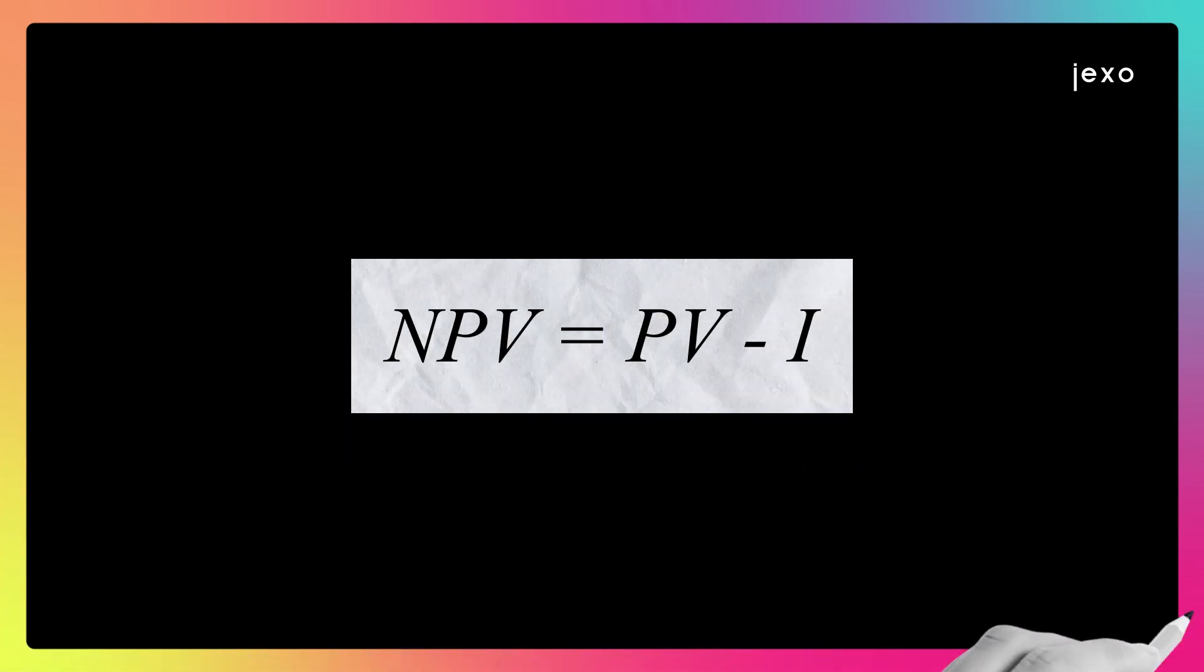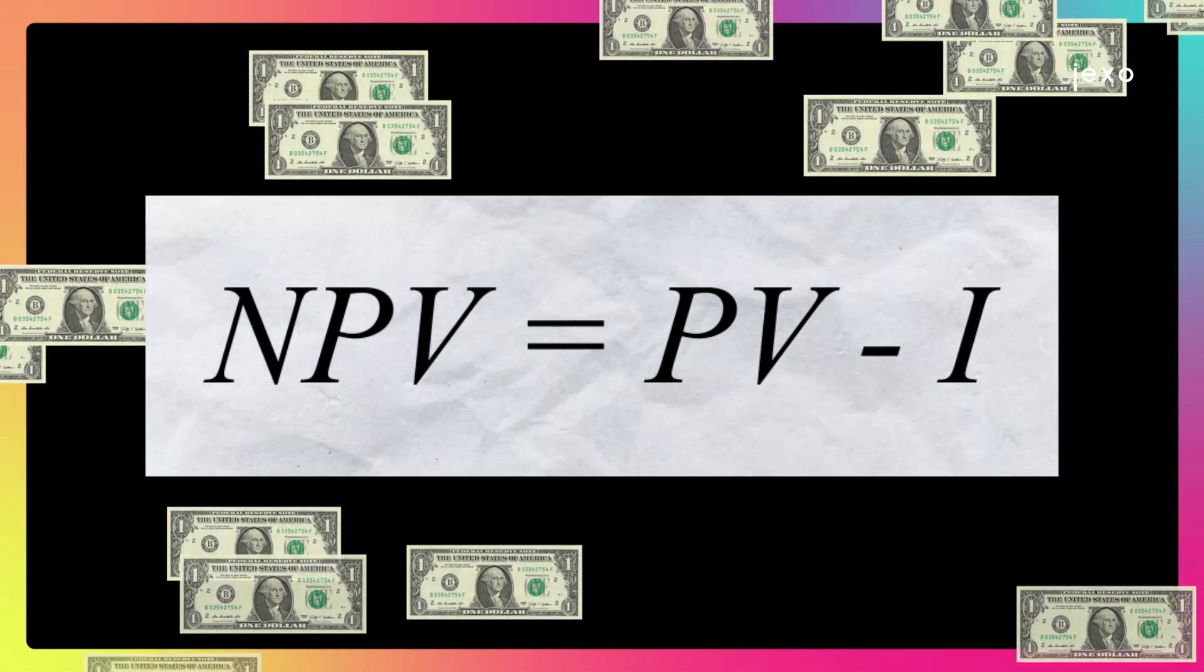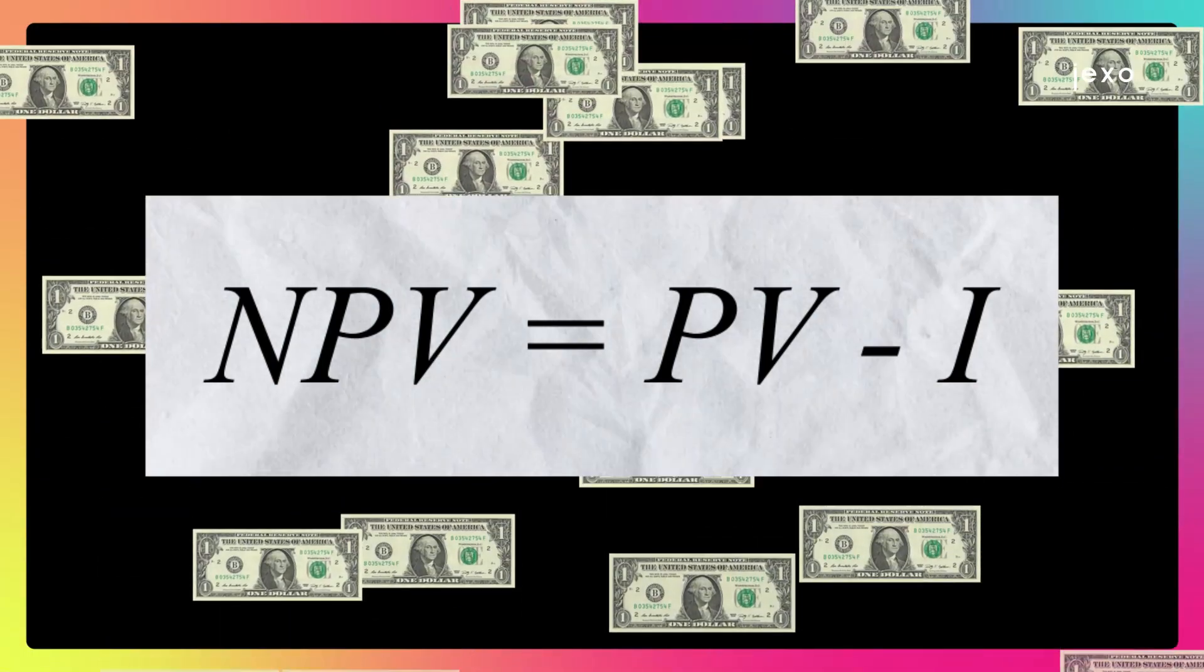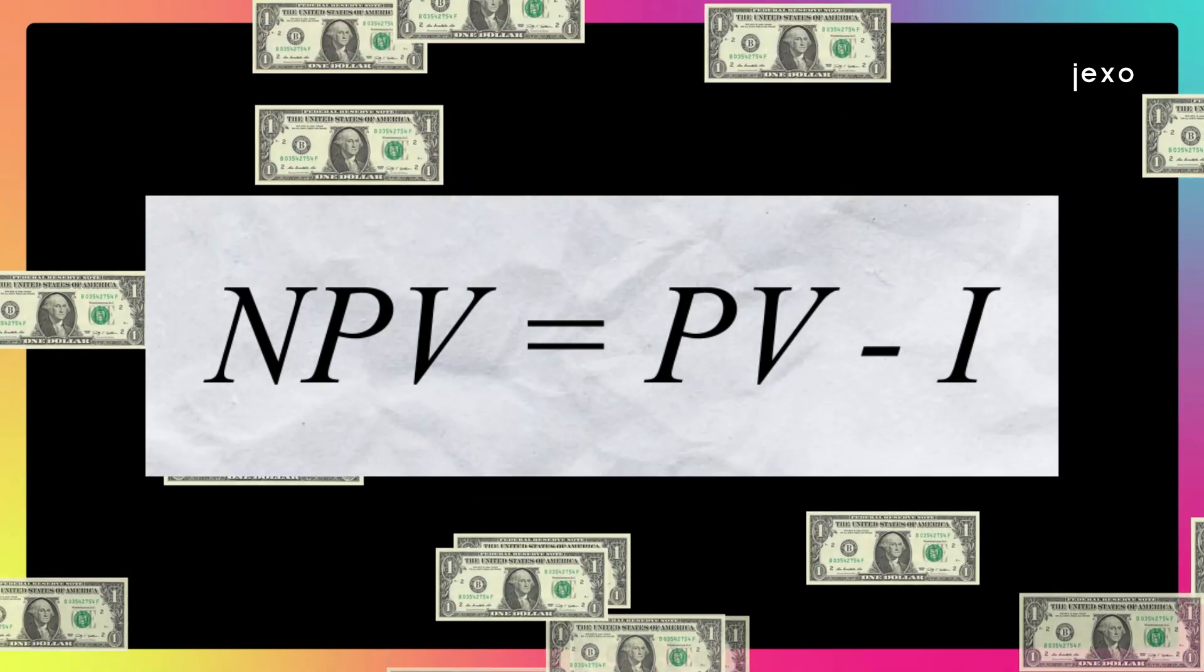NPV indicates the amount of money you expect to make from an investment by looking at the difference between the value of money now and the value of that same money in the future.